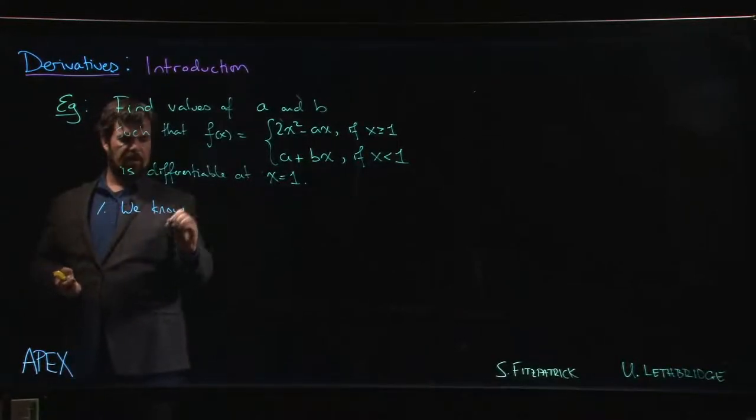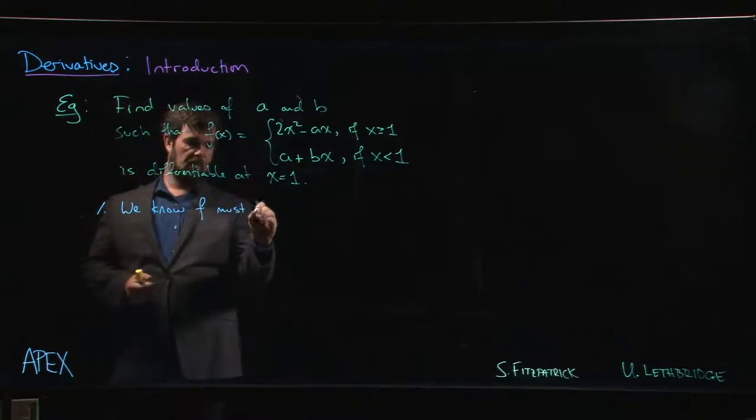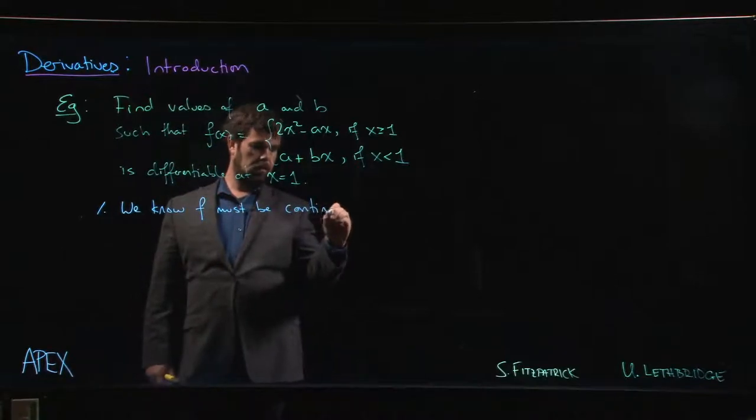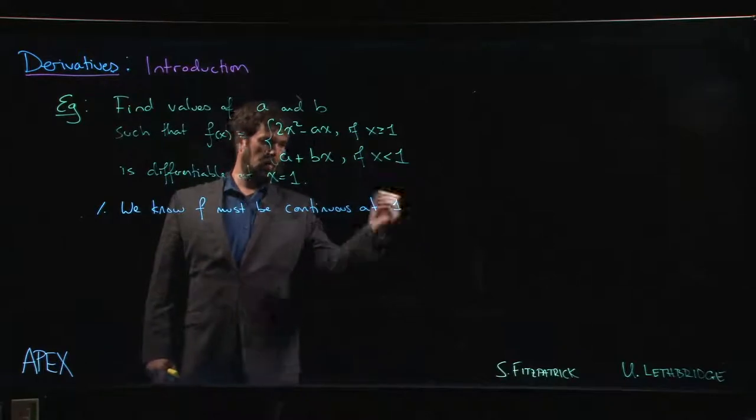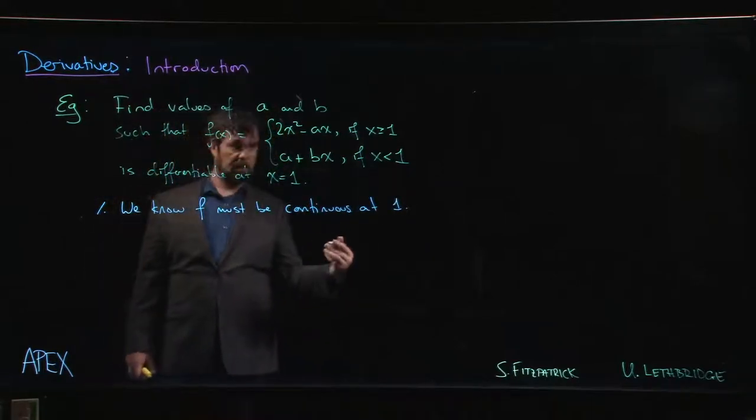we know that if it's going to be differentiable, then f must be continuous at one. And if it's going to be continuous at one, the left-hand limit had better equal the right-hand limit.